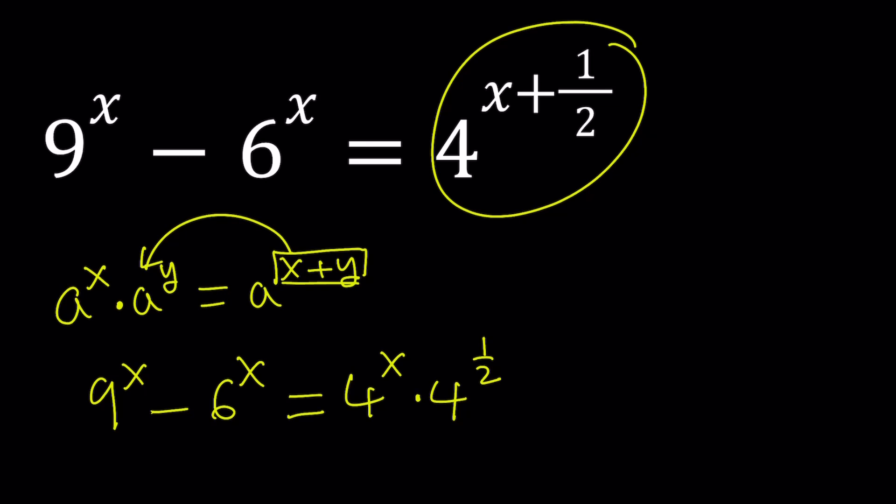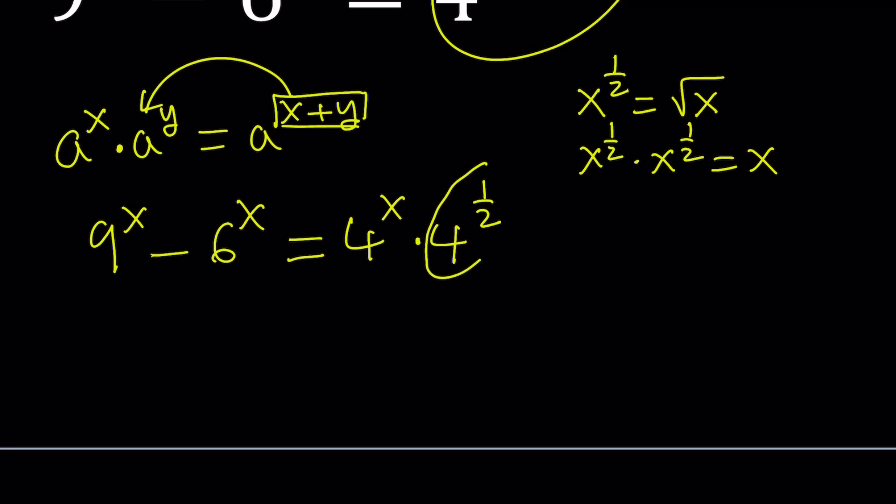What is 4^(1/2)? Obviously we're looking at the real values here. It just means the square root. Any number x which is non-negative to the power 1/2 is the square root of x, because if you multiply this expression by itself, you get x. So the square root of 4 is 2. We get 9^x - 6^x = 2·4^x.